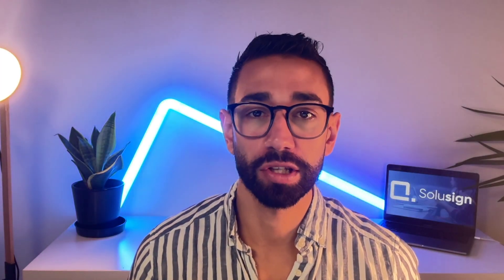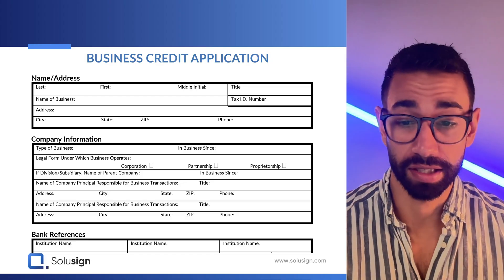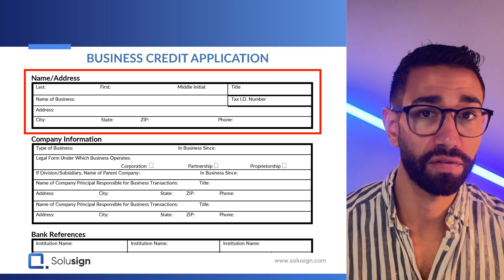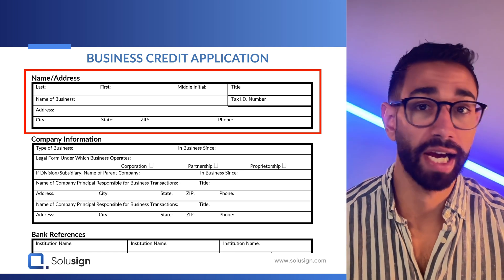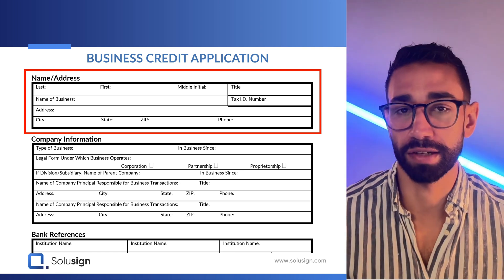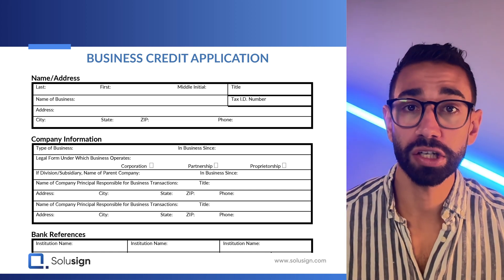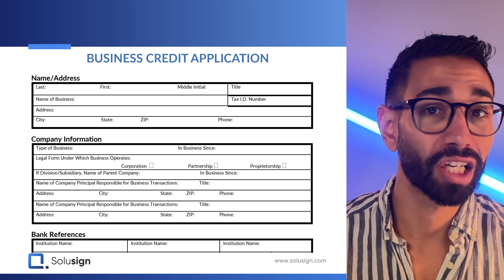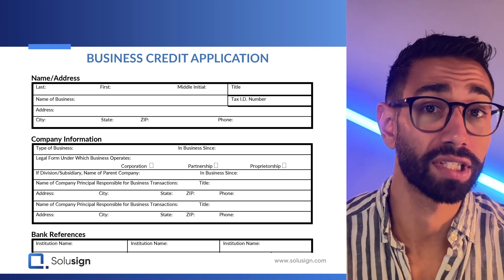But before we talk about dynamic documents, let's talk about what a static document is. A static document, like this accredited application form, is called static because it has predefined placeholders for the variable text — this is where you will add your DocuSign fields. In static documents, the number and location of fields will remain in the exact same location, regardless of the character length of whatever text you put in those fields.